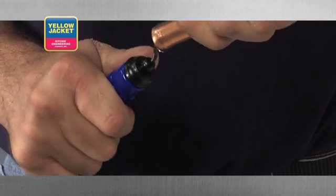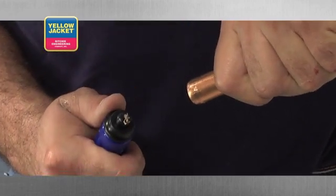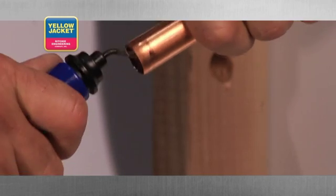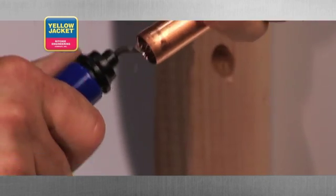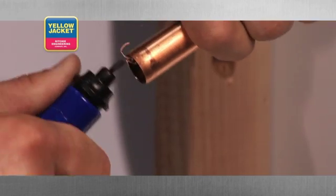Notice the burrs will peel up and away from the path of the blade and easily drop out of the tube. Using your deburring tool in this manner makes it far less likely you'll need to retrieve the burrs that fall inside your tubing.